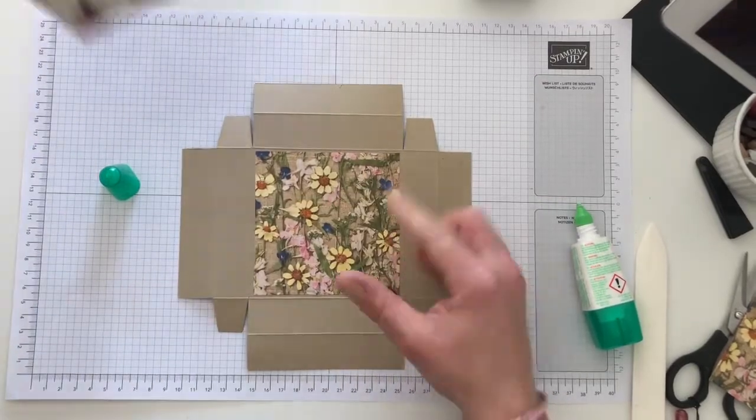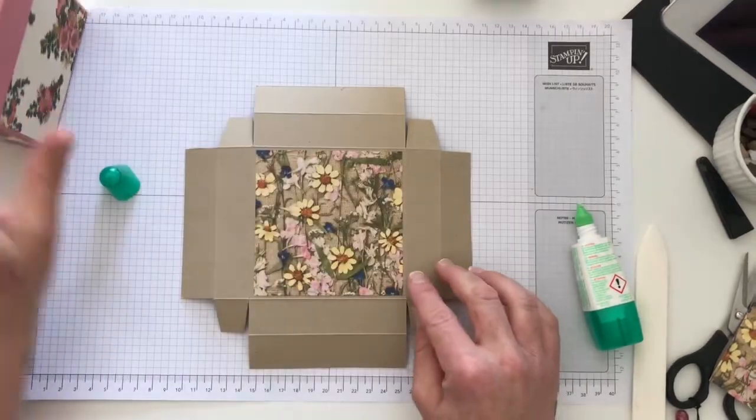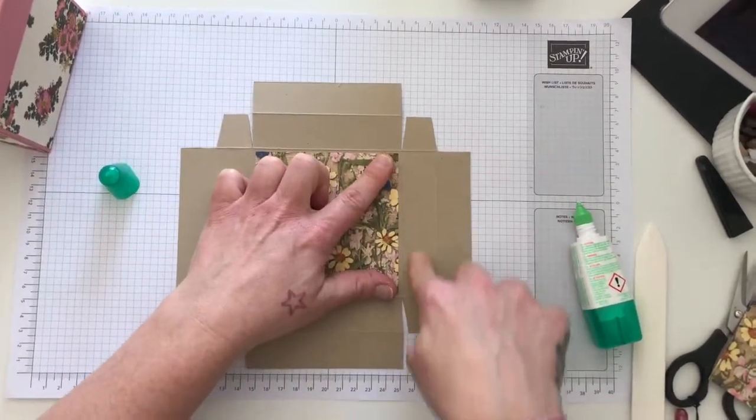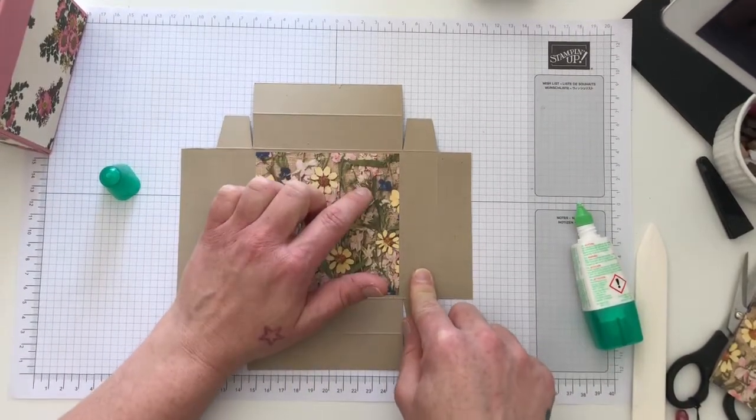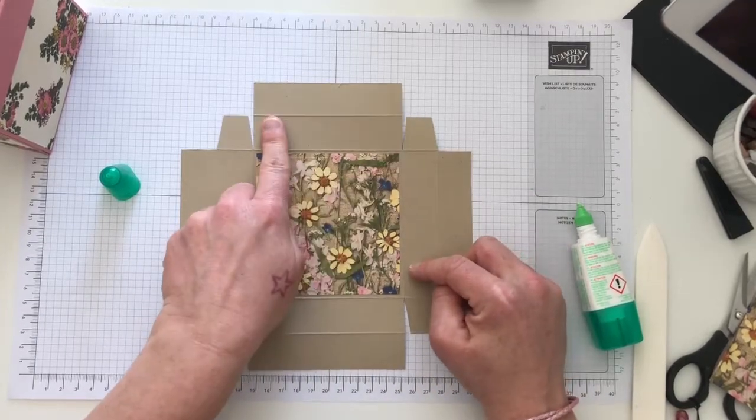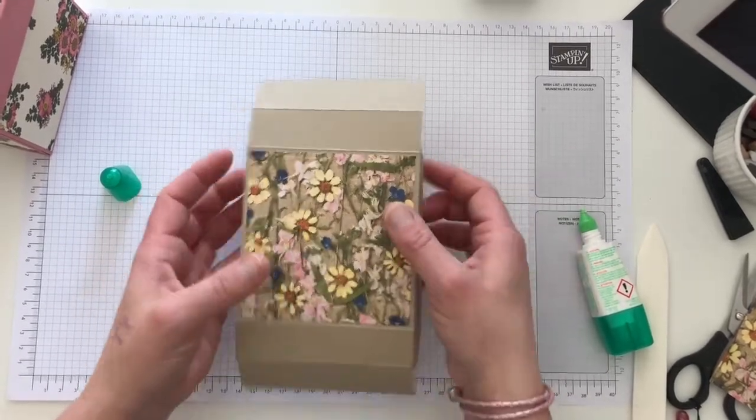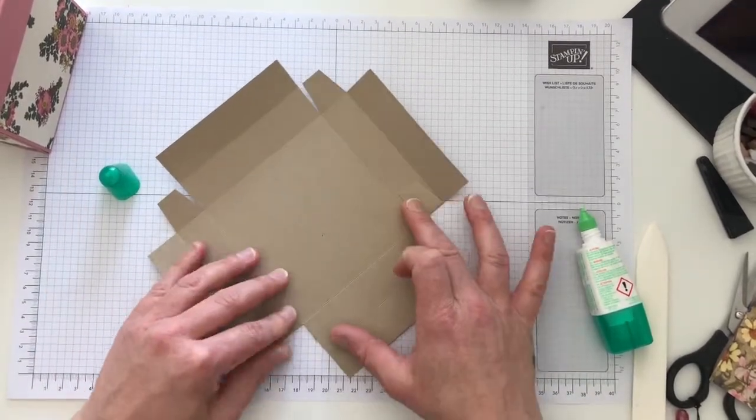Now as you'll see on my lid here, I didn't add DSP on the side. I actually quite like the pop of the color coming round. If you wanted to, you could add DSP on there. If you wanted to add DSP, it would need to be 10.2 the same in length by 2cm.